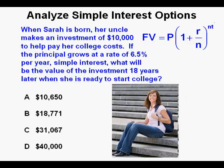We'll take a look at this problem. When Sarah is born, her uncle makes an investment of $10,000 to help pay for her college costs. If the principal grows at a rate of 6.5% per year of simple interest, what will be the value of the investment 18 years later when she is ready to start college?